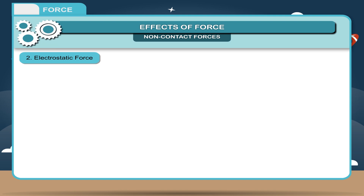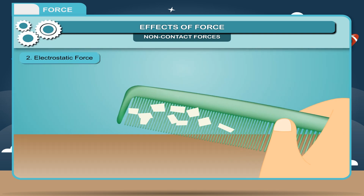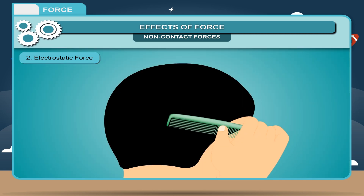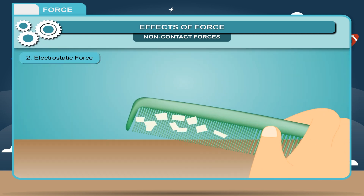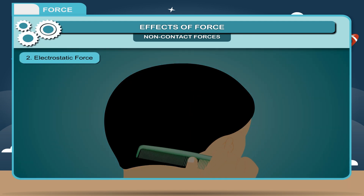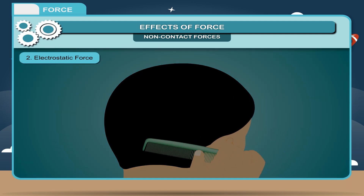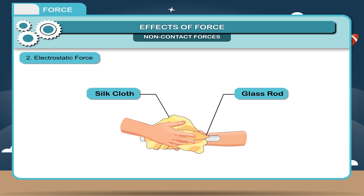Electrostatic force: The force of attraction or repulsion between two electrically charged bodies is called electrostatic force. Example: Rub a comb on your hair and bring it near small bits of paper. The pieces of paper are attracted towards the comb due to electrostatic force. This attraction occurs because some objects on rubbing acquire electrical charge. A glass rod rubbed with silk also acquires similar properties.